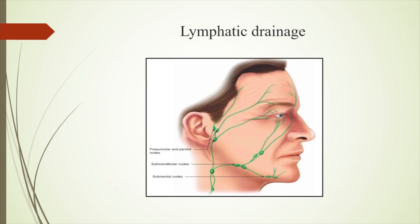Lymphatic drainage: medially and laterally there are two lymphatics that drain. Laterally the preauricular lymph nodes drain, and medially the submandibular nodes drain. The superior two-thirds of the upper lid and one-third of the lower lid drain laterally, with the remaining portions draining medially — the opposite for each respective lid.